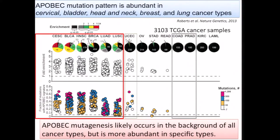But we see that there are mutation clusters which are very heavily enriched with APOBEC. This is why I put this statement that it probably occurs in the background everywhere, but for some reason in some cancers only it goes up — either because there is more mutagen, or because there is more substrate for the mutagen, which is single-strand DNA. Our DNA is normally double-stranded and only transiently during replication forks or around some unusual events becomes single-stranded.